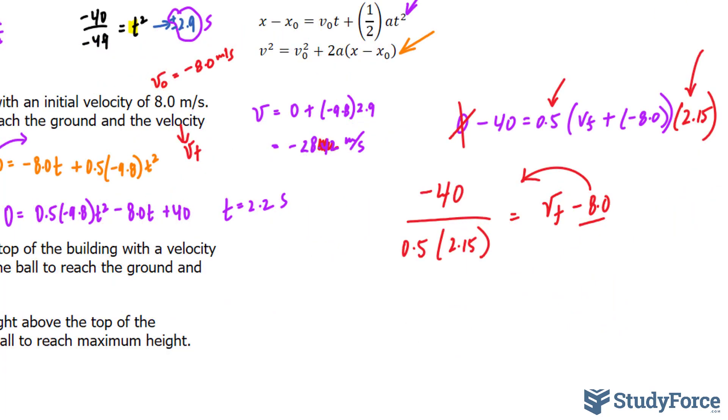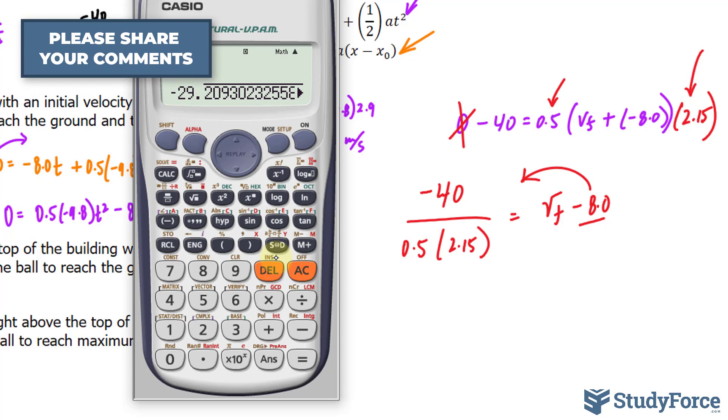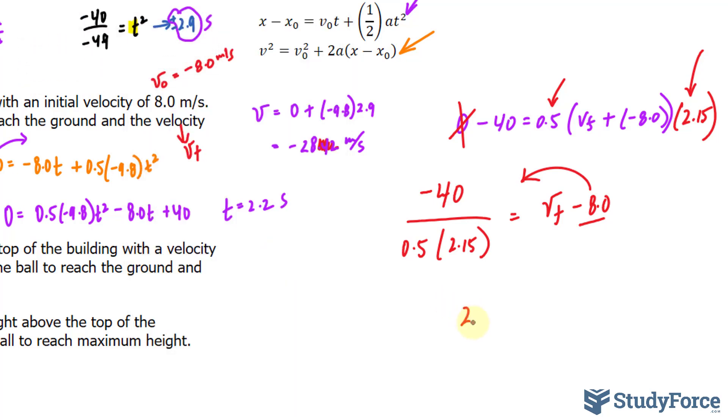But let's find out what the left side is using our calculator again. Negative 40 divided by 0.5 times 2.15. We get this number plus 8. That is roughly equal to 29 meters per second. So I'll write down 29 meters per second. Notice that if you write down the direction, you don't need to include that minus symbol.